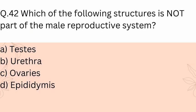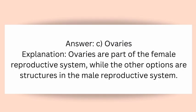Question 42: Which of the following structures is not part of the male reproductive system? A) Testes, B) Urethra, C) Ovaries, D) Epididymis. Answer: C) Ovaries. Explanation: Ovaries are part of the female reproductive system, while the other options are structures in the male reproductive system.